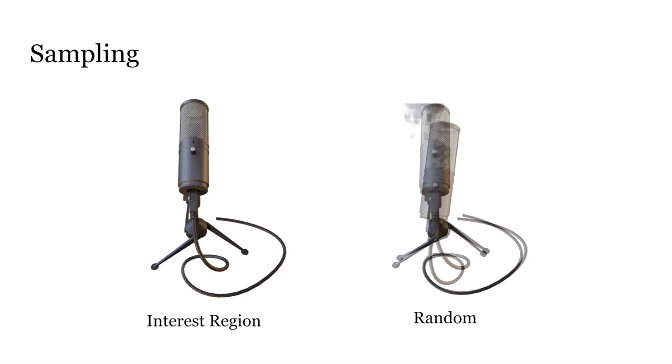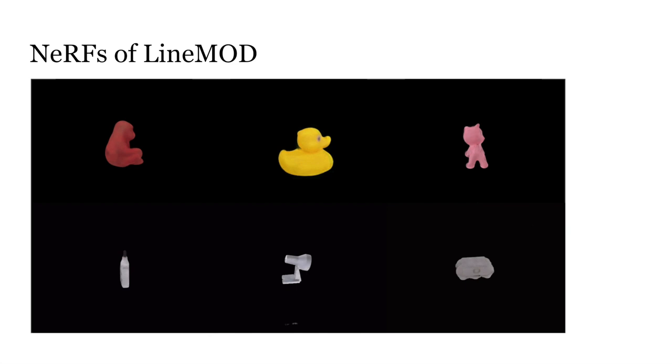We also evaluate iNeRF on LINEMOD, a popular object pose estimation benchmark. First, we train neural radiance fields on LINEMOD objects with synthetic data. Then, we apply iNeRF to estimate these object's poses in the real photos, which are masked by the predictions of the segmentation model.